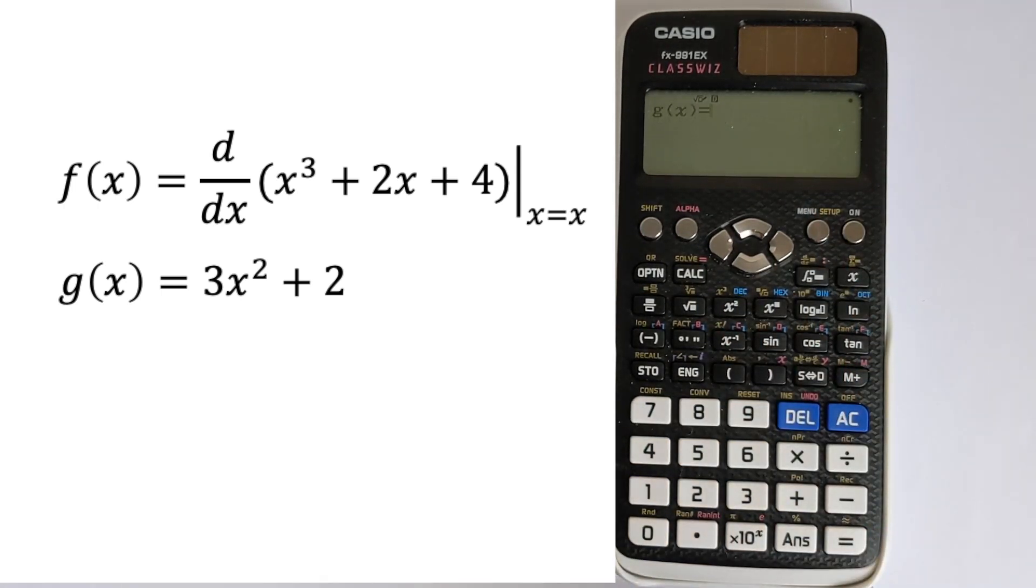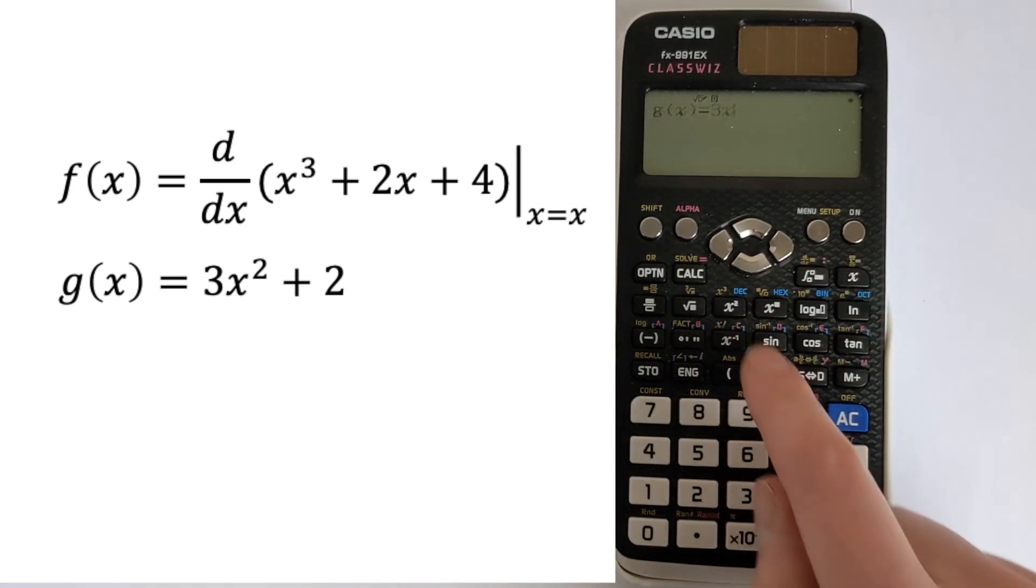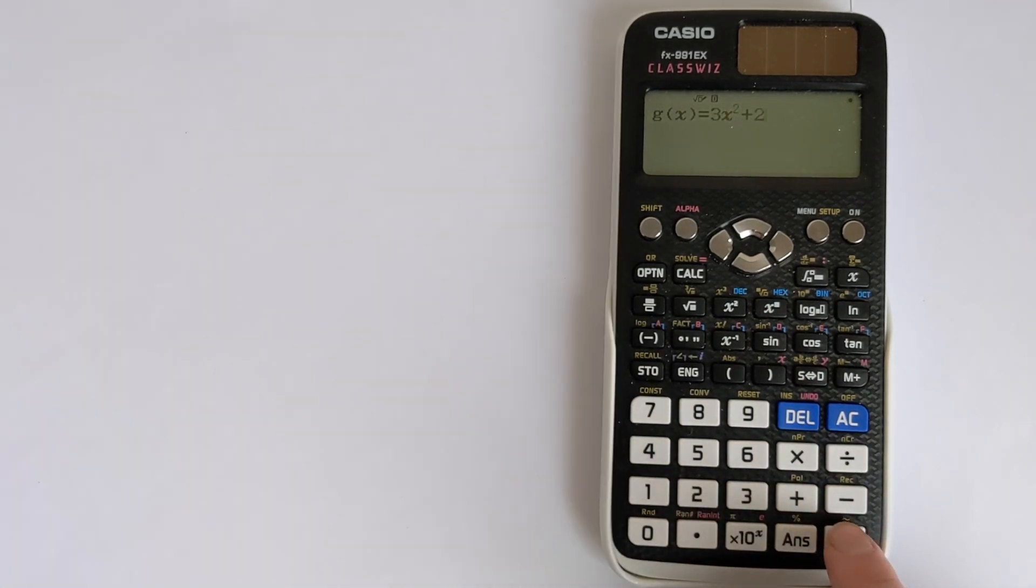So we press equals, then it will ask for g of x. g of x is going to be what you think the derivative is. So we're going to go 3x squared plus 2.